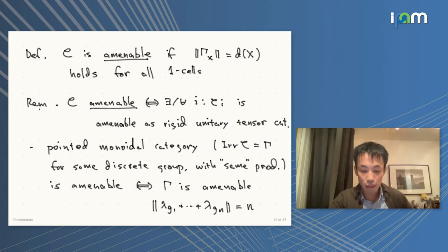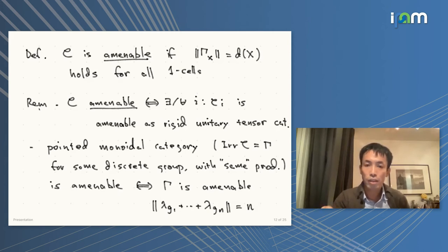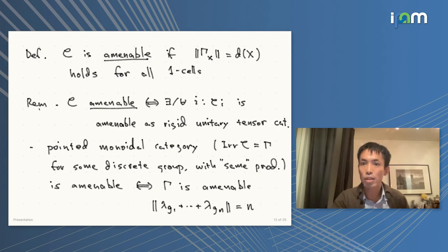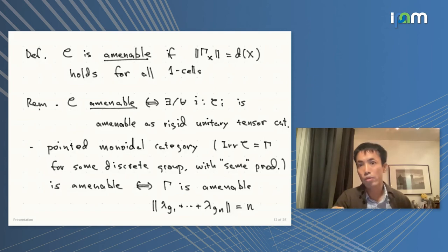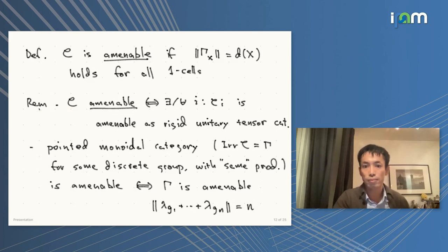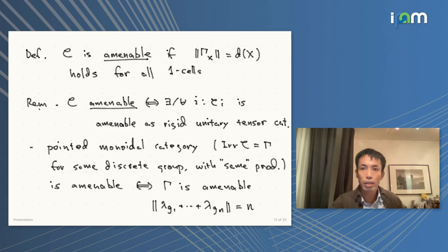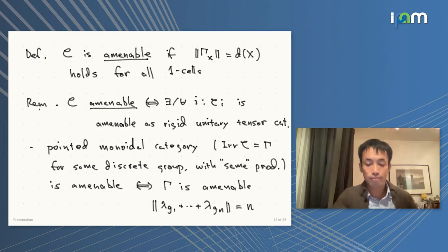There are several standard reductions: amenability defined this way is equivalent to amenability of any corner, which will be a unitary widget monoidal category. Also, if you are looking at pointed categories where the fusion rules look like a discrete group, you essentially recover amenability of that group — something like convex combinations of the translation unitary representation with the sum of coefficients.